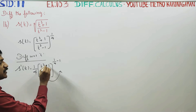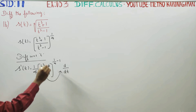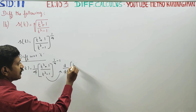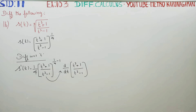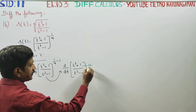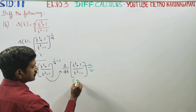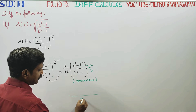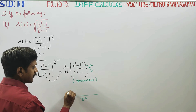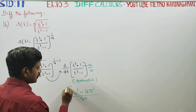Now we differentiate d by dt of (t cubed plus 1 divided by t cubed minus 1). We apply the quotient rule here — u by v model — giving us the denominator v squared in the denominator.